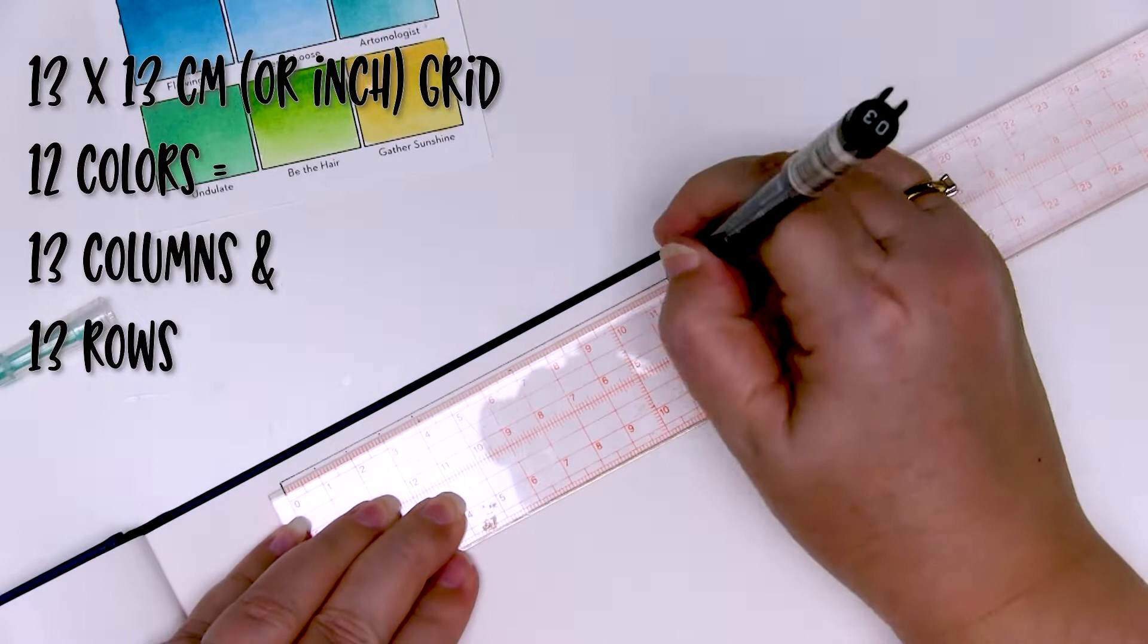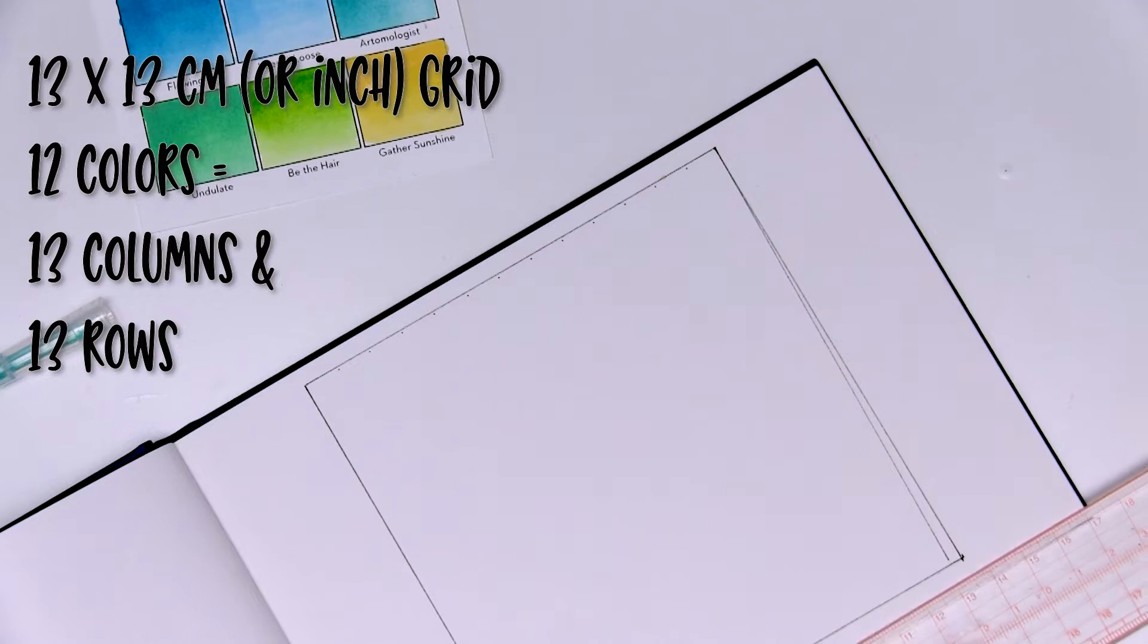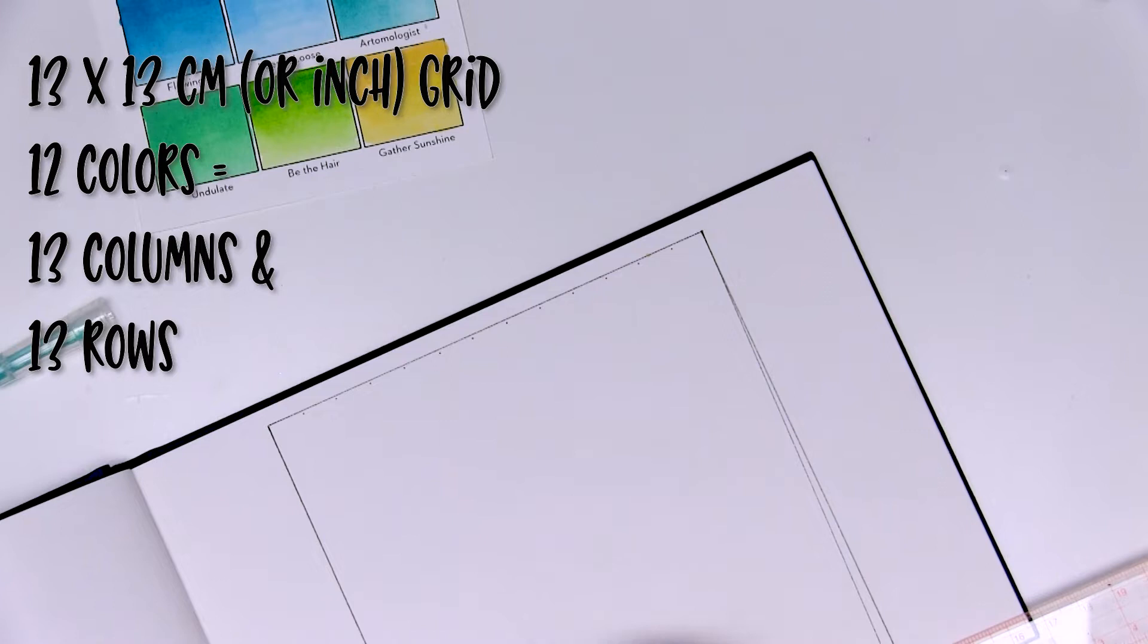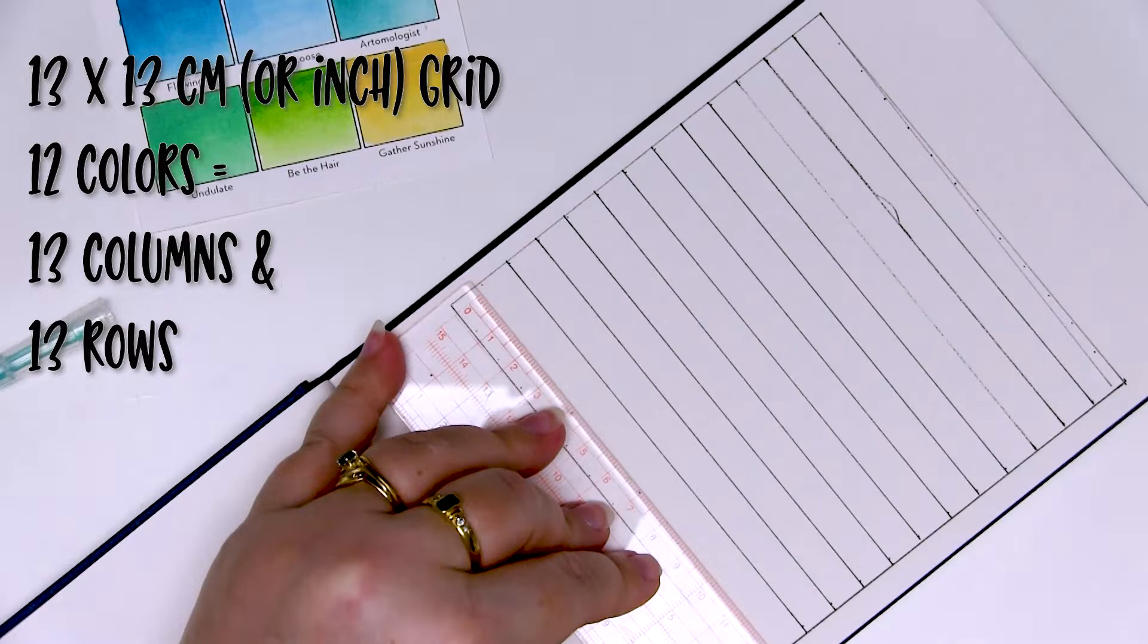Now basically all that you need to do is draw a box that will fit. If you've got 12 paints, it'll have 13 rows and 13 columns, and it can be any size you like. I'm making each box one centimeter wide and one centimeter high so I get a nice small grid. You might like to do one inch boxes so that you've got a bit more room to play with the color.